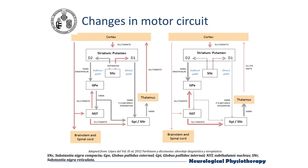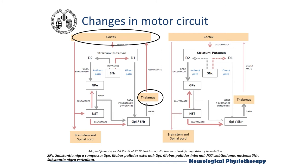The pars compacta is the damaged area in Parkinson's disease, and then there is the subthalamic nucleus. In the slide we can see a diagram of the internal communication between basal ganglia with the respective neurotransmitters and their relationship with other structures of the central nervous system, directly with the thalamus and the cerebral cortex. The red arrows represent stimulating interactions and the grey ones the inhibitory ones.